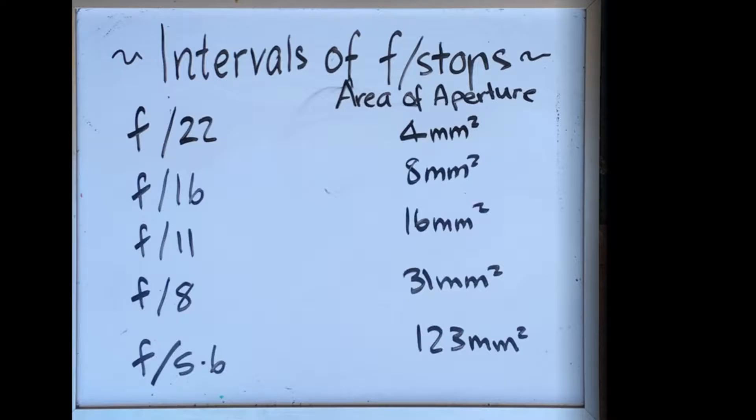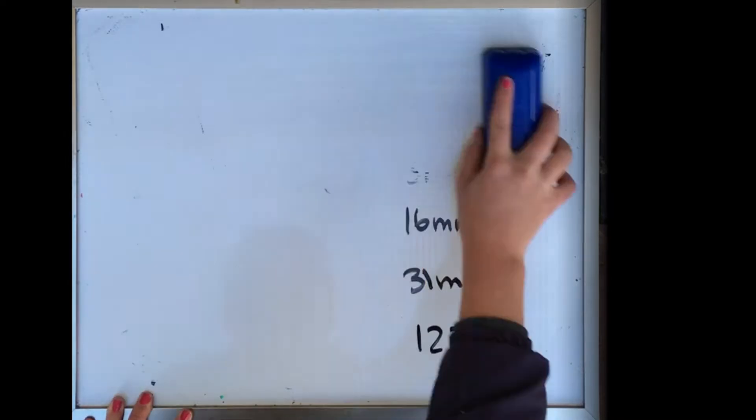The f-stops are measured by each one letting in approximately half the light, although the f-stops go from f4 to f2.8 to f2 to f1.4, for example. f2 lets in half the light iris size 1.4 does, 2.8 is half 2, 4 is half 2.8, and so on.